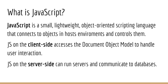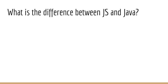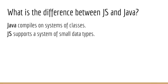Now let's clear up a very common question: what is the difference between JavaScript and Java? Well, they're two completely different languages. We can get down to the nitty-gritty and unpack the computer science differences. For example, Java compiles on a system of classes, while JavaScript supports a system based on small data types.